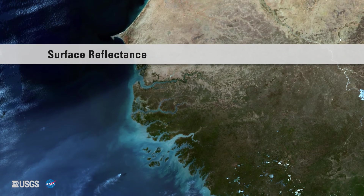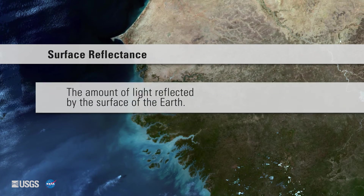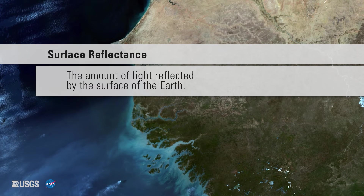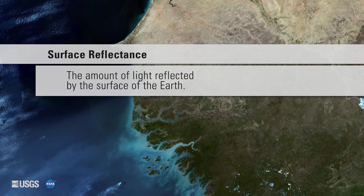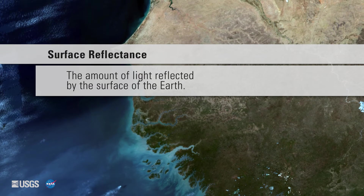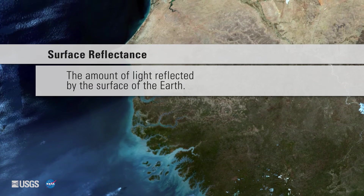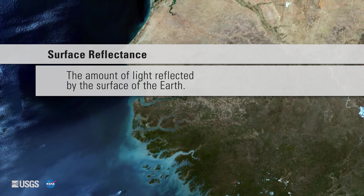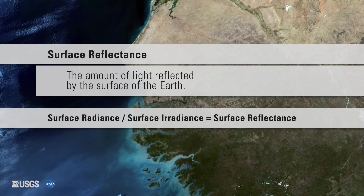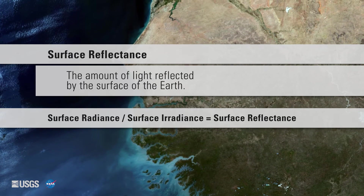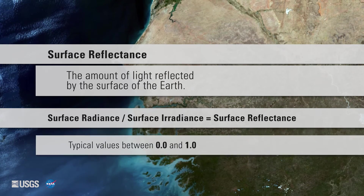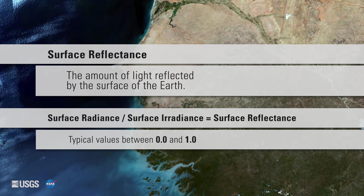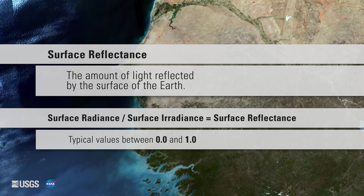Surface reflectance can be described as the amount of light reflected by the surface of the Earth. VIIRS surface reflectance data are estimates of surface reflectance in each of the VIIRS reflective bands. Surface reflectance is a unitless ratio of surface radiance to surface irradiance, with a value that typically falls between 0 and 1.